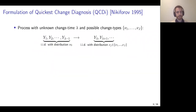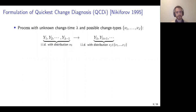Despite these many applications, Quickest Change Diagnosis has only been formulated and rigorously solved relatively recently. One of the first formulations was developed by Nikiforov in 1995. In Nikiforov's formulation, we observe a process with an unknown change time and a finite number of possible change types — a finite number of possible post-change distributions. Initially the process is IID with distribution nu-naught, which is the marginal distribution at one time step, and then after the change time the observations are IID with one of those possible post-change distributions.